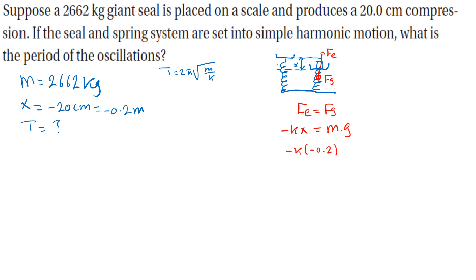Minus K into negative 0.2 equals 2662 into 9.8. Then K is equal to 2662 into 9.8 over 0.2.